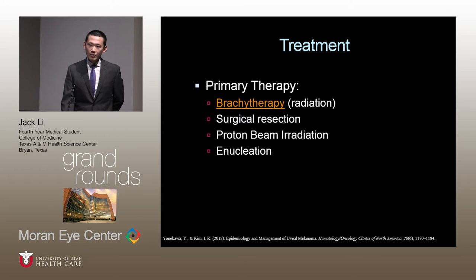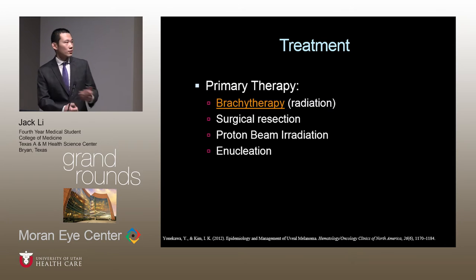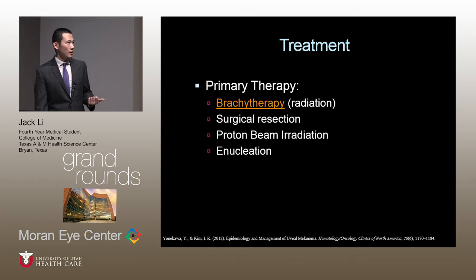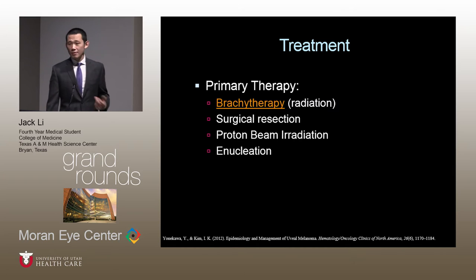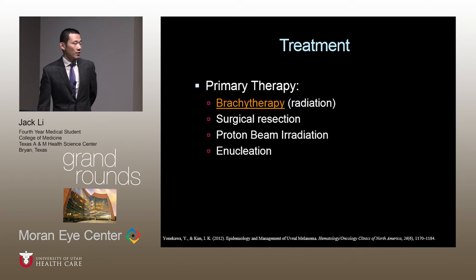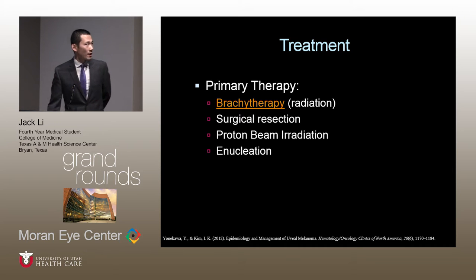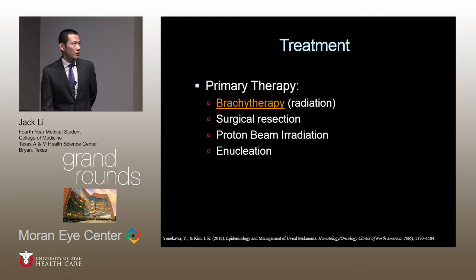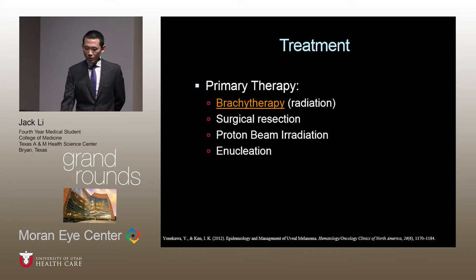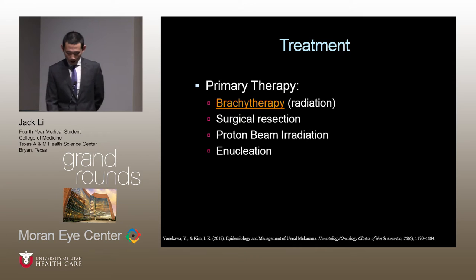Treatment for iris melanomas is divided into surgery or radiation, and the specific treatment is highly individualized depending on location, depth of invasion, size of the lesion, and patient preference. Surgical resection is favored when the lesion is accessible. Brachytherapy delivers localized radiation via a radioactive plaque sewn under the conjunctiva. Proton beam irradiation can treat more posteriorly located uveal melanomas. Enucleation is a last resort for eyes where the tumor is too large or radiation would destroy vision anyway.